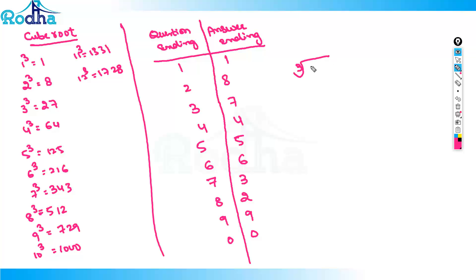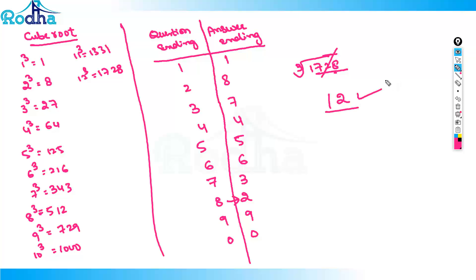Cube root of 1728. First step: it is ending with 8, so the answer will end with 2. Here, unlike square root where you cut the last 2 digits, you cut the last 3 digits. Remaining is 1. Since 1 is 1 cubed, the answer is 12.